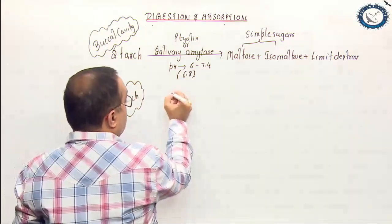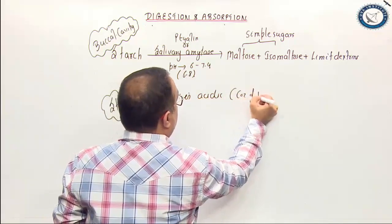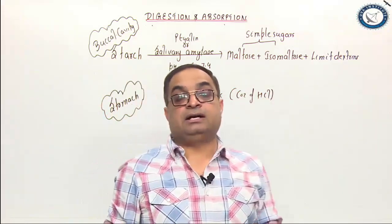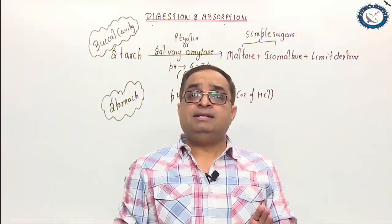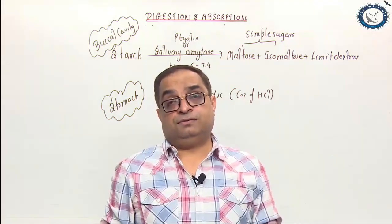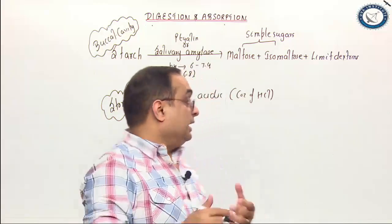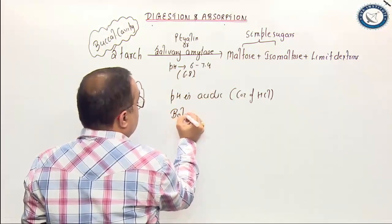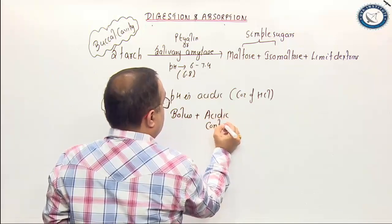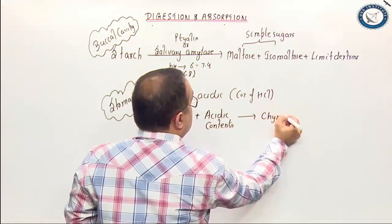Because of HCl, the pH is acidic, and acidic pH inhibits the activity of ptyalin. But by the time the entire bolus becomes acidic, nearly 30 to 50 percent of starch has already been digested by salivary amylase. In the stomach, the bolus gets mixed with the acidic contents, and bolus plus acidic contents of the stomach is called chyme.